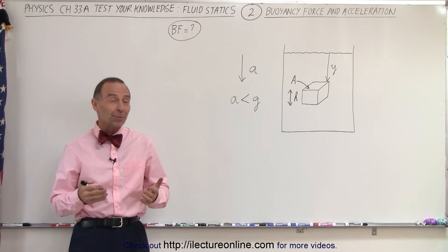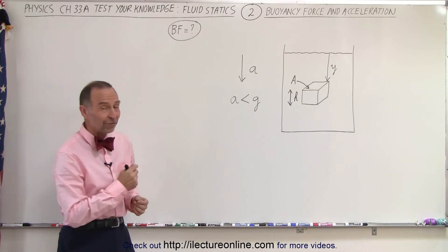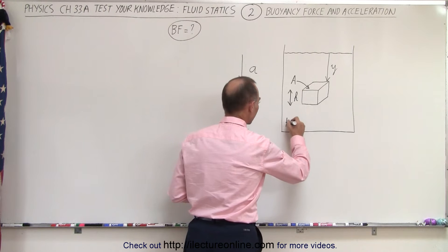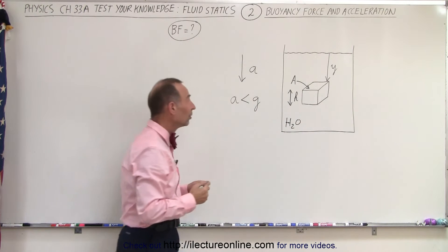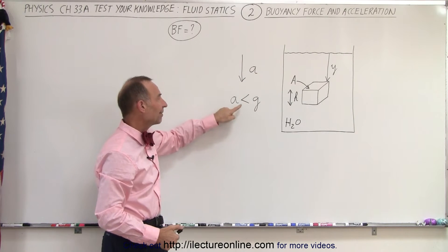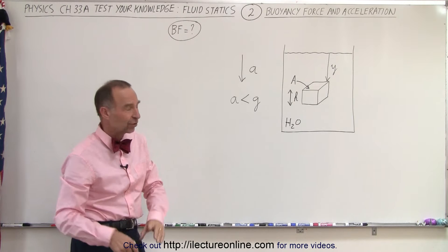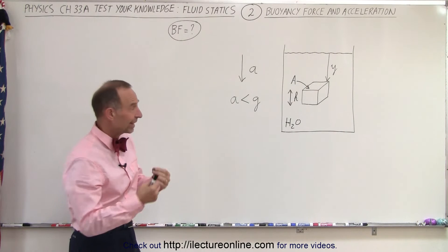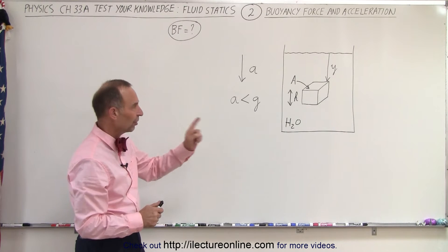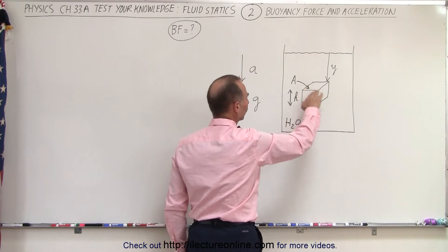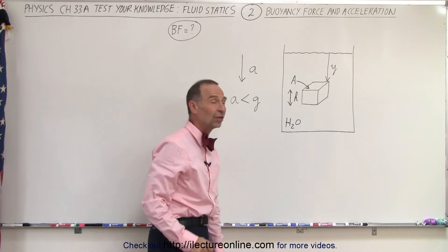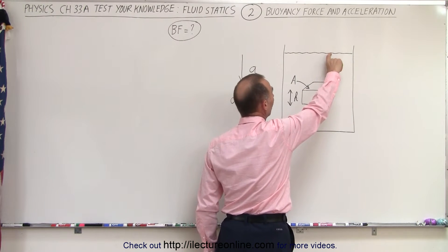Welcome to our lecture online. The next problem asks us to find the buoyancy force on an object inside a tank full of water. The tank is also accelerating downward at acceleration A, where A is less than g — similar to the previous example where we found pressure inside a downward-accelerating tank. The object has a flat surface at top and bottom with area A, height H, and the top of the object is a distance Y below the surface.